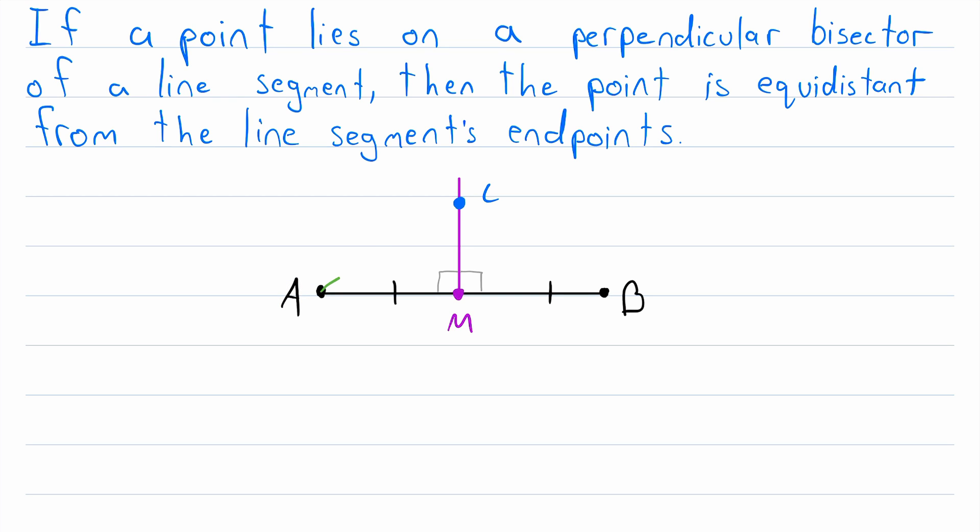Well, the distance between A and C is the length of this line segment here. Similarly, the distance between C and B is this line segment here. So we're trying to prove that these line segments are congruent.